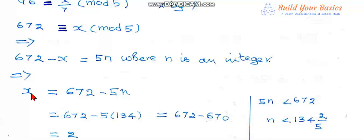Now this x must be positive. Therefore, this 5n must be less than 672, that is n must be less than 134 and 2 by 5.